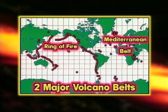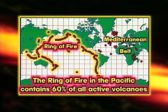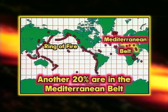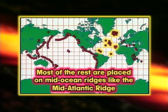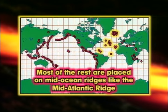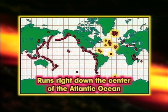There are two major volcano belts. The Ring of Fire in the Pacific contains 60% of all active volcanoes. Another 20% are in the Mediterranean belt, and most of the rest are located on mid-oceanic ridges, like the Mid-Atlantic Ridge, which runs right down the center of the Atlantic Ocean.